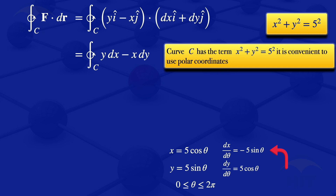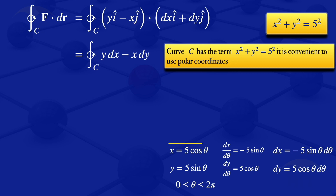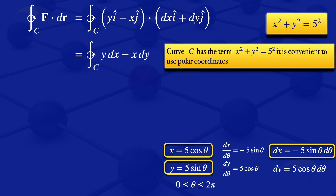From the x equation, we can rewrite it so that dx equals minus 5 sine theta dθ. Rewriting the y equation gives dy equals 5 cosine theta dθ. So now we have: x = 5 cosθ, y = 5 sinθ, dx = −5 sinθ dθ, dy = 5 cosθ dθ, and theta varying from 0 to 2π.